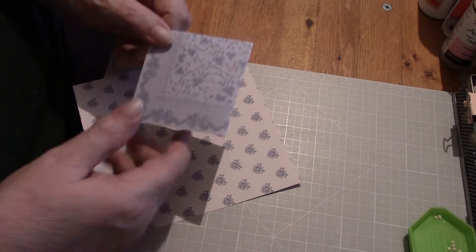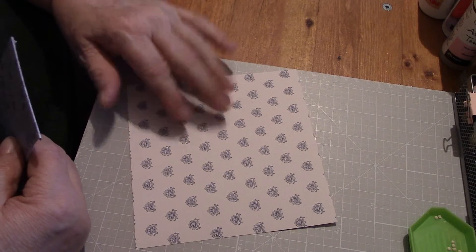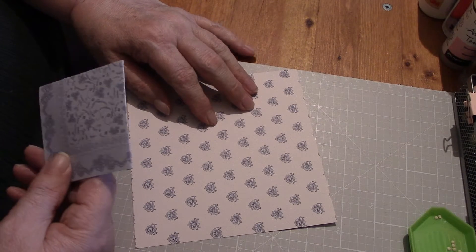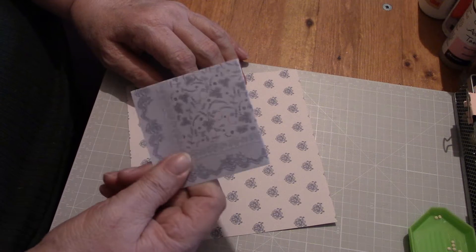What you need is a square piece of paper, this is a six by six, and lighter is better than heavier because you've got some folding to do.